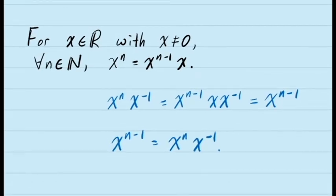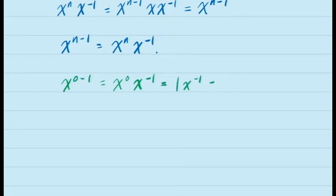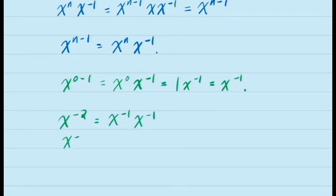If we consider what would happen if we allowed non-natural number exponents — for example, if we looked at x to the power negative 1 — we would see that x to the power negative 1 under this formula would be equal to x to the power 0 times x inverse, which is simply x inverse. We would then have x to the exponent negative 2 equal to x to the exponent negative 1 times x inverse, and so on.